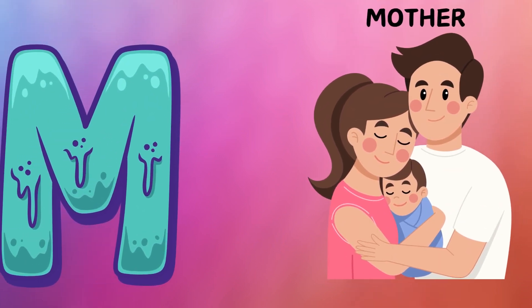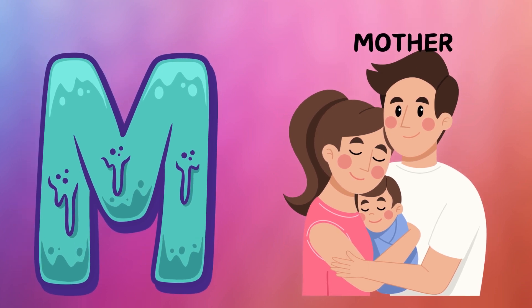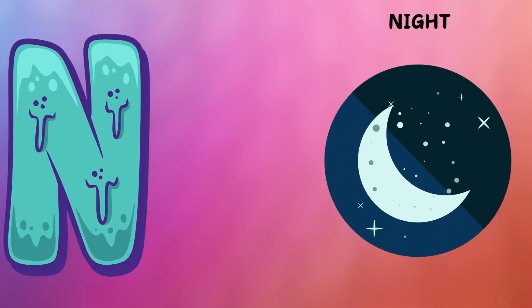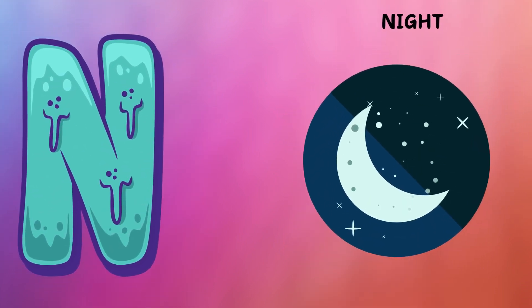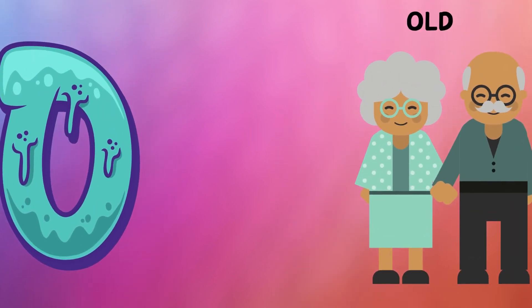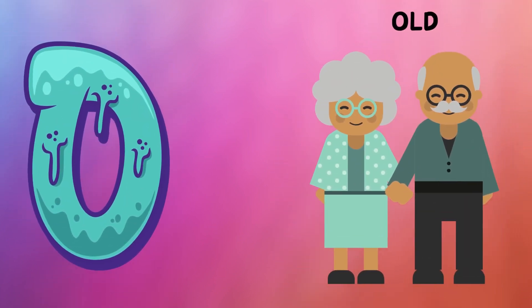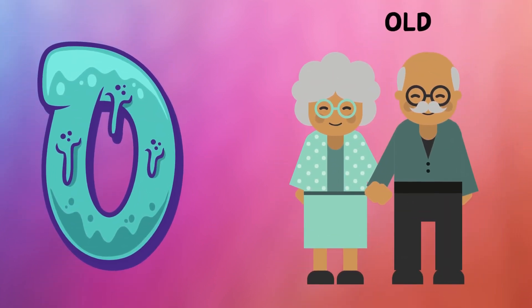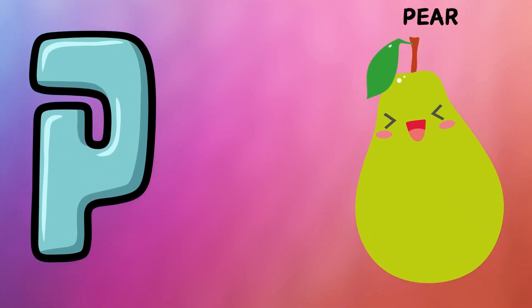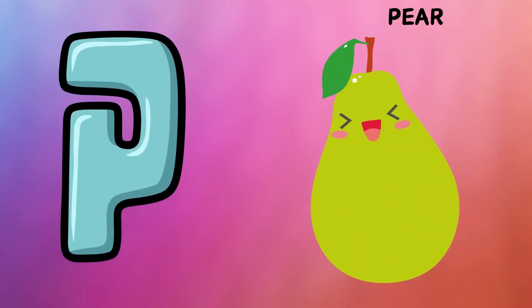M is for mother, m-m-mother. N is for night, n-n-night. O is for old, o-o-old. P is for pair, b-b-pair.